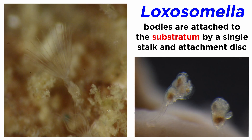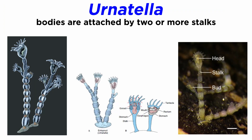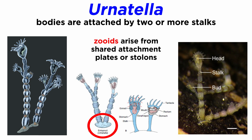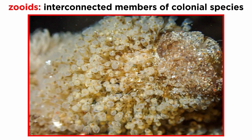Their bodies may be attached to the substratum by a single stalk and attachment disc with adhesive glands, such as in the solitary members of genus Loxosomella, or by two or more stalks in colonial forms like Urnatella, where individual zooids arise from either shared attachment plates or from a network of stolons, which are tubes that run across a surface. Interconnected members of colonial species are known as zooids, since they are not fully independent animals, meaning they cannot survive on their own.